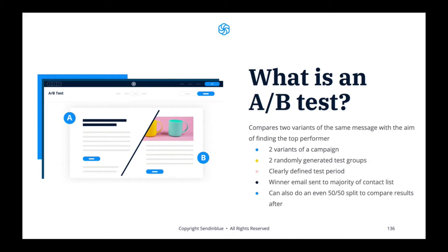From there, you select a percentage of your list to be used as a sample group. Let's say you select 20%. That means the two versions of your campaign will be split evenly among this 20%, with random contacts receiving one of the two different variants. After a specified period of time, your test can be completed and you compare the results of the two different samples to see which version performed the best.